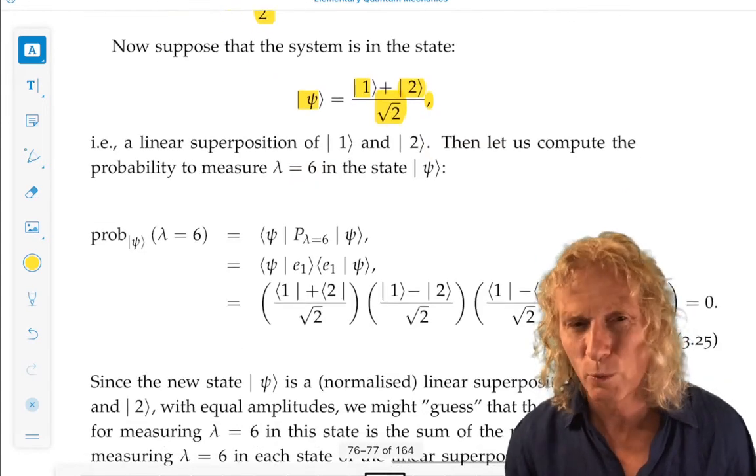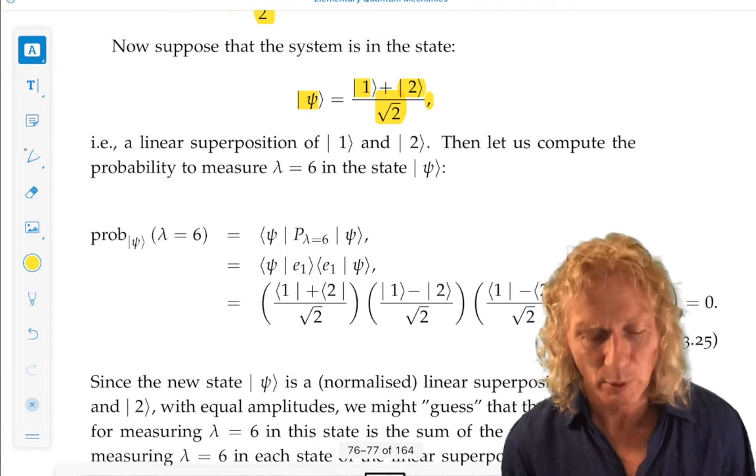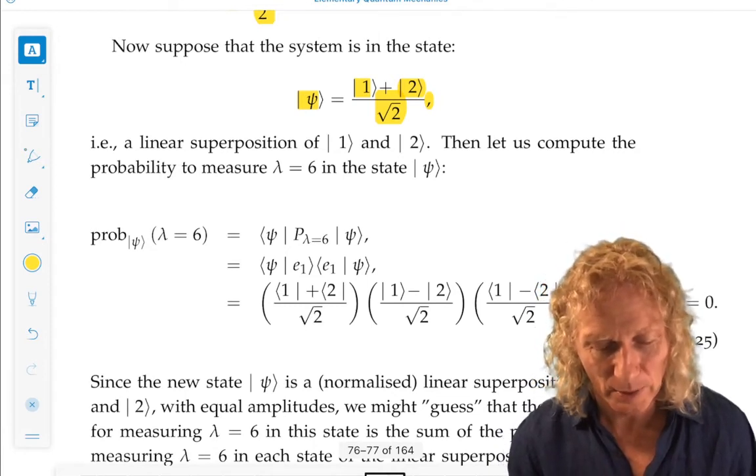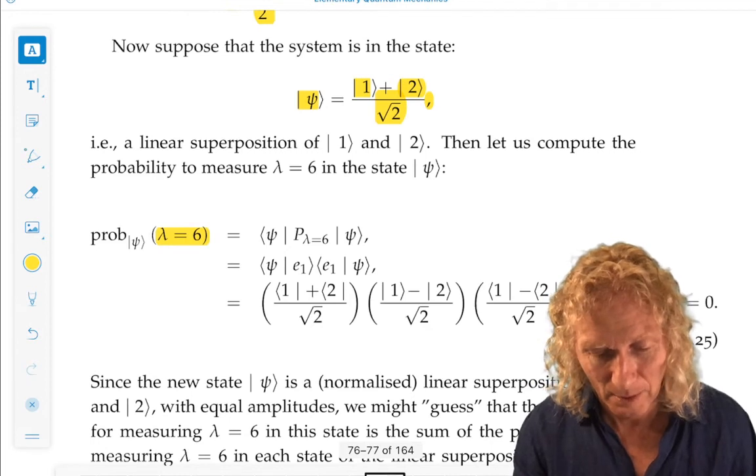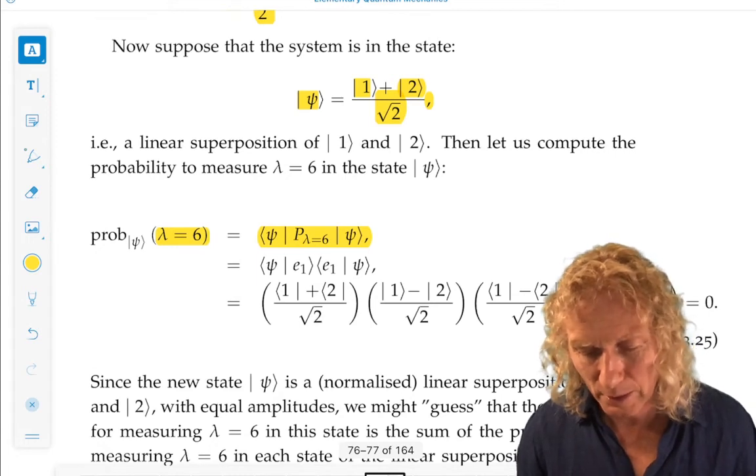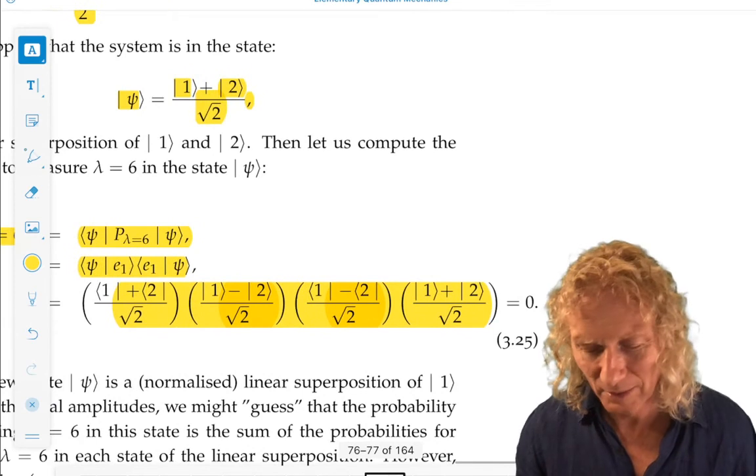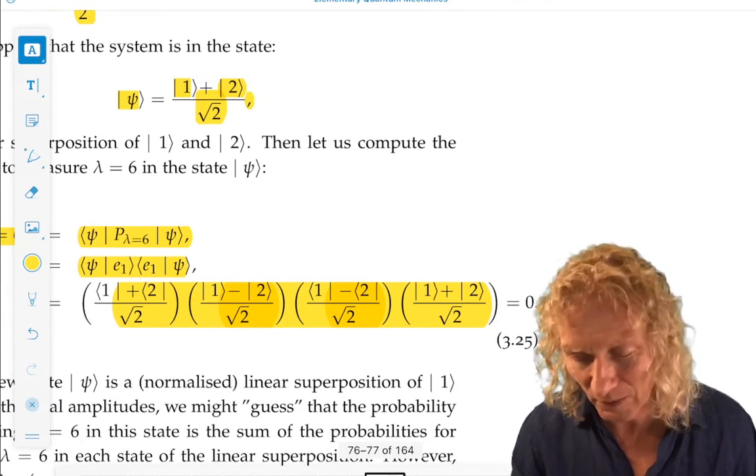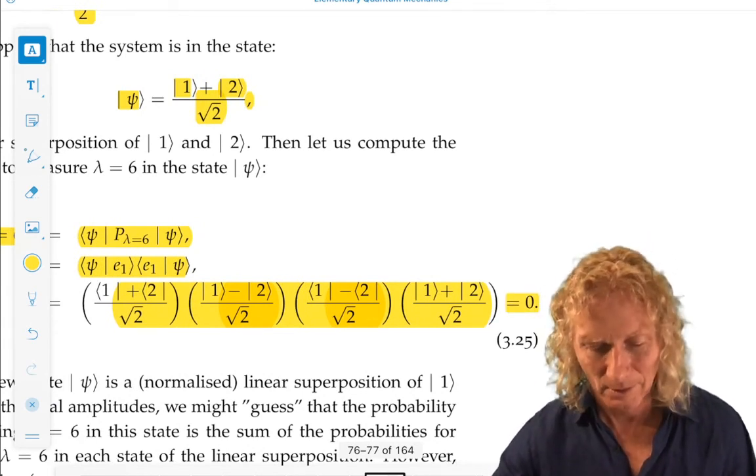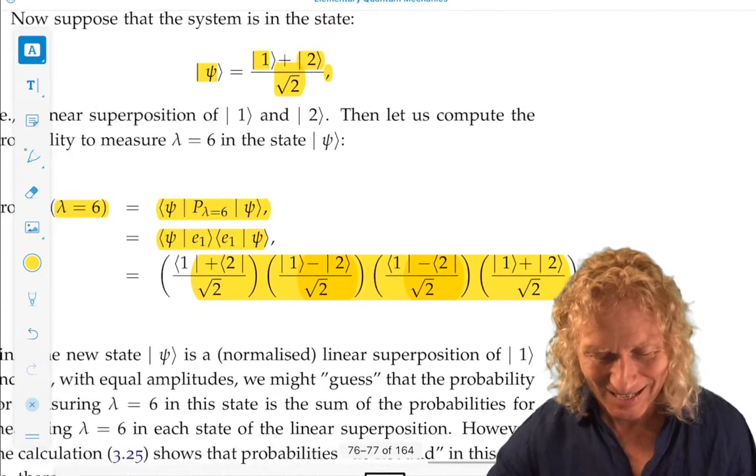Now let's look at a different state in which we're going to make a measurement. Ket ψ is a linear combination of ket 1 and ket 2 that's normalized. A linear superposition of ket 1 and ket 2 that's normalized. So what would be the probability of measuring λ = 6 in this state? Well, that's the formula. Go through the calculation. Important that you do that. It's great practice. Zero. The answer is zero. That's weird. Well, it's weird, but it's not weird.